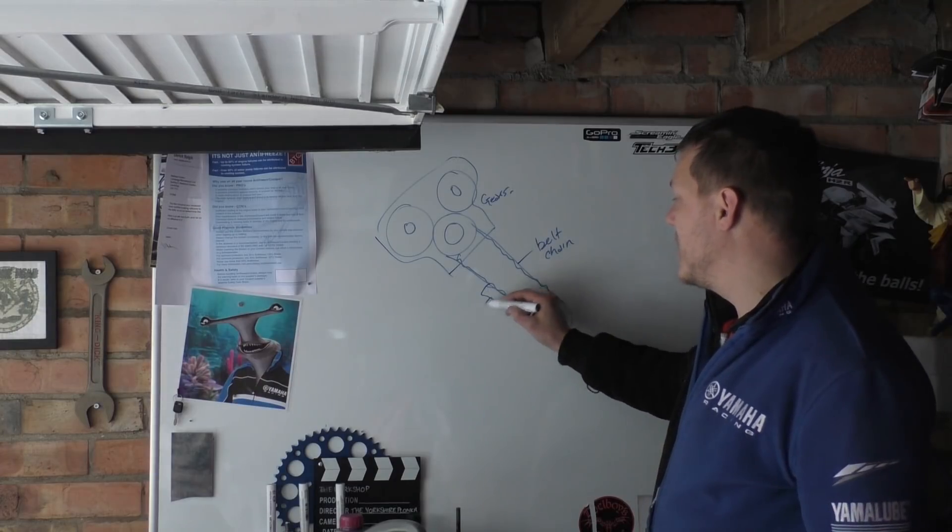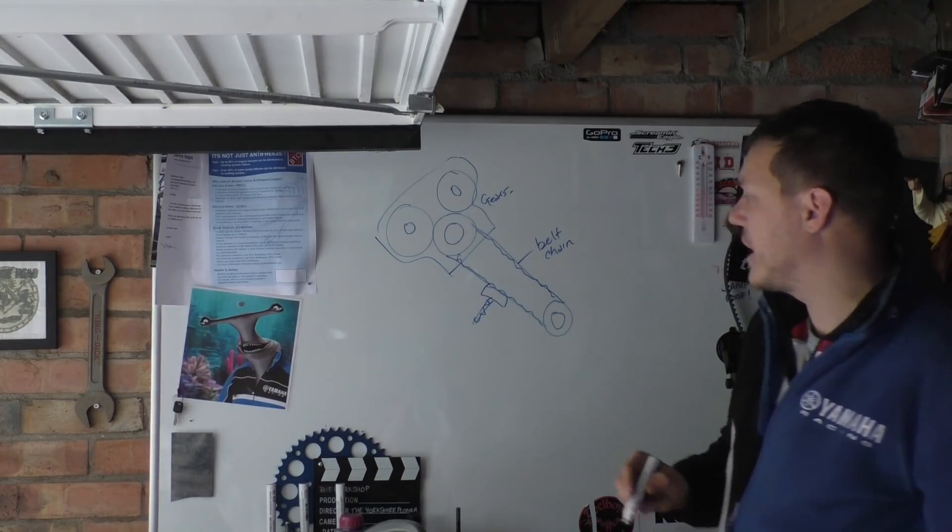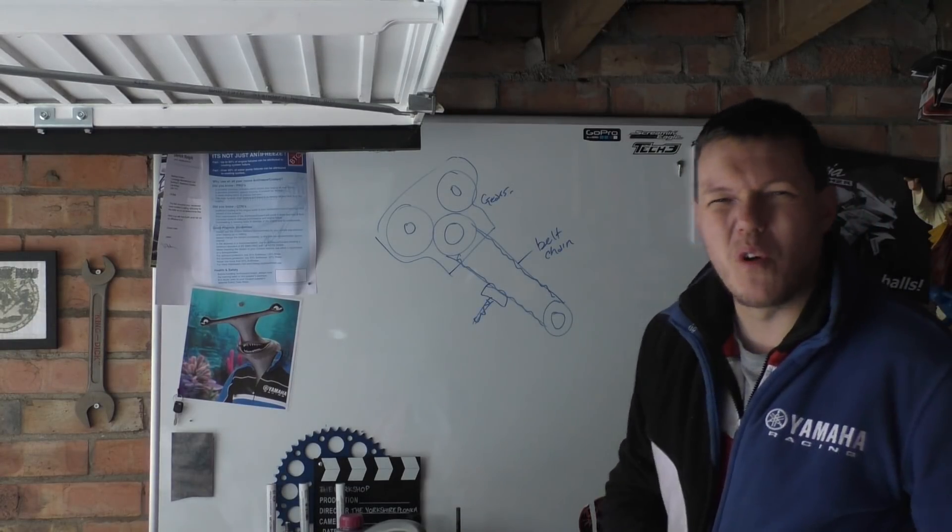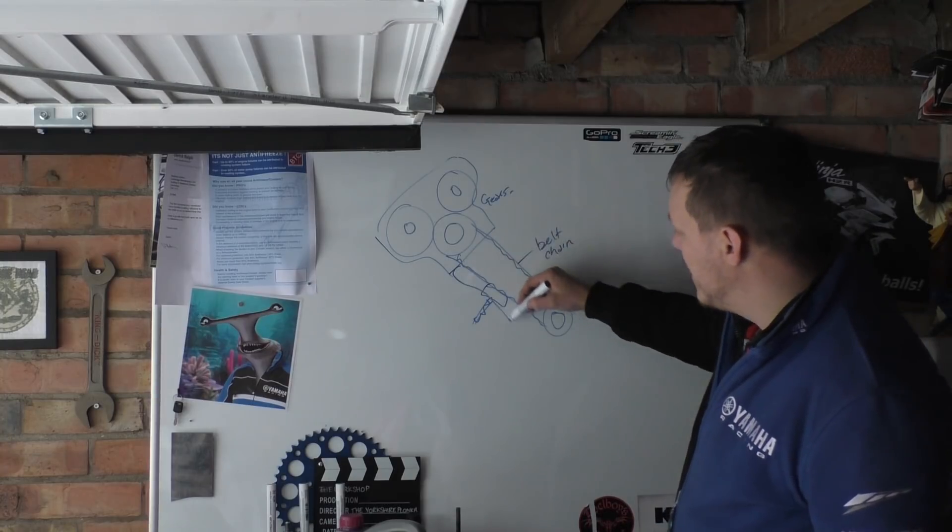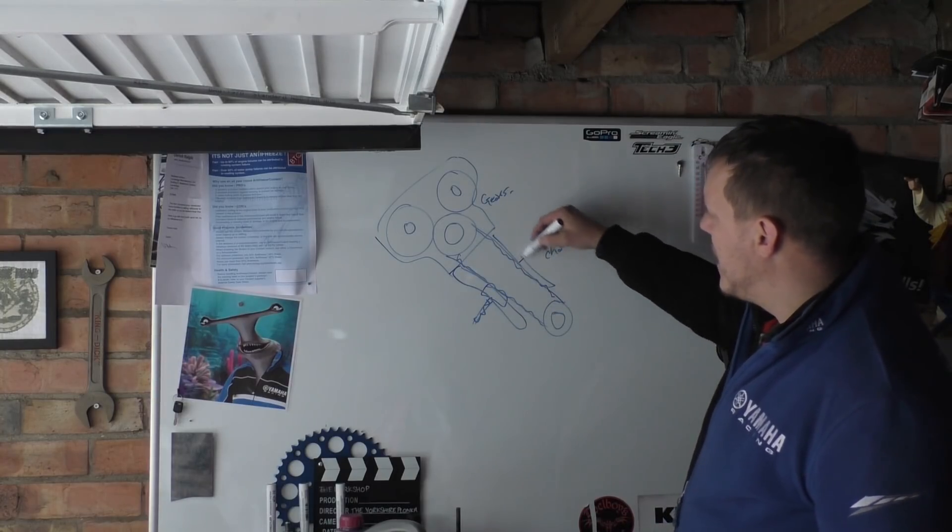It also makes your cam chain tensioner quite easy to work out. You can have a smaller one if you want, instead of having big blades and all the rest of it.